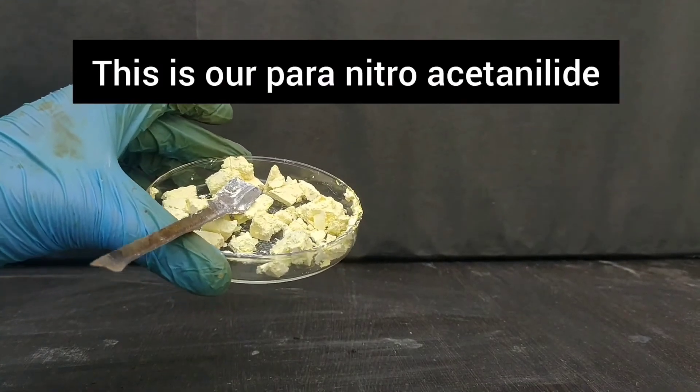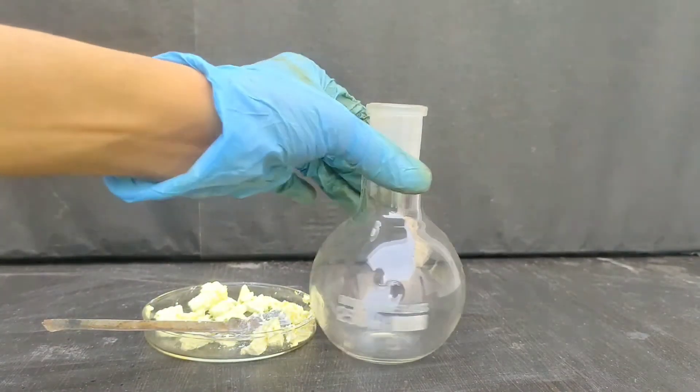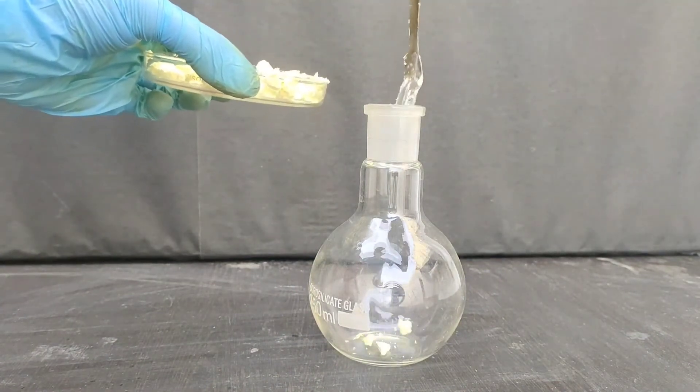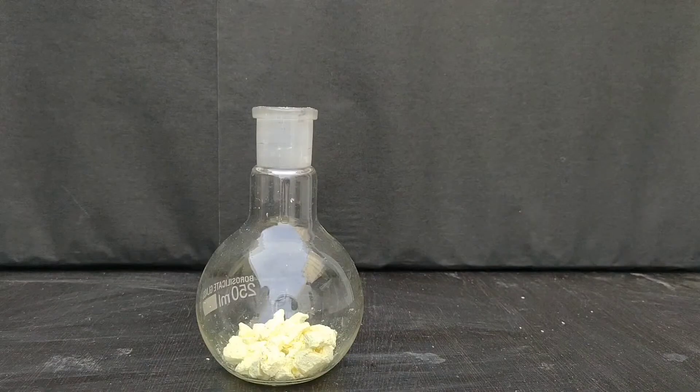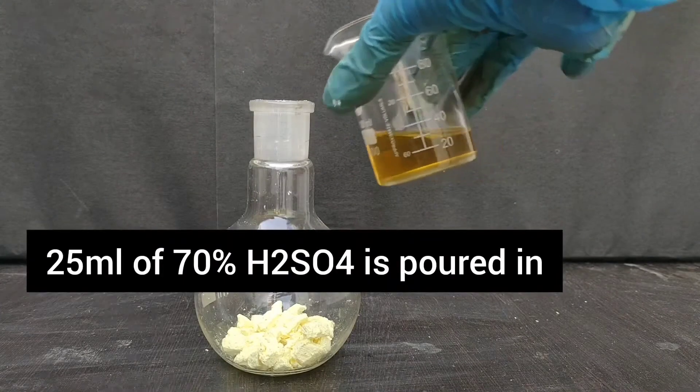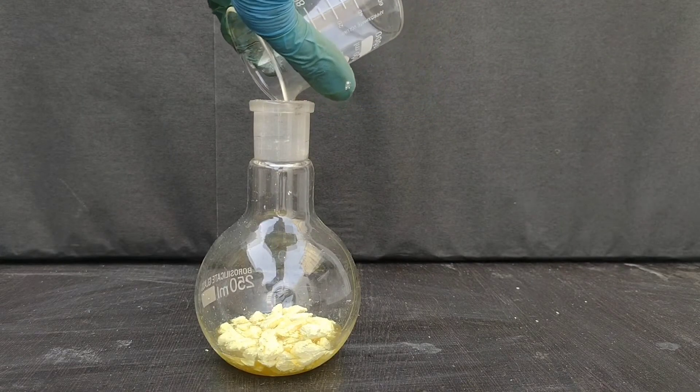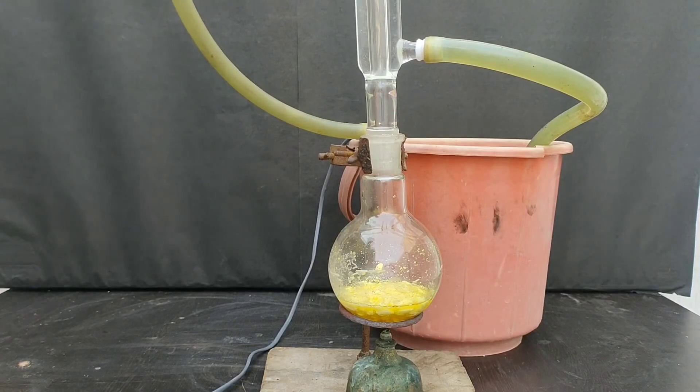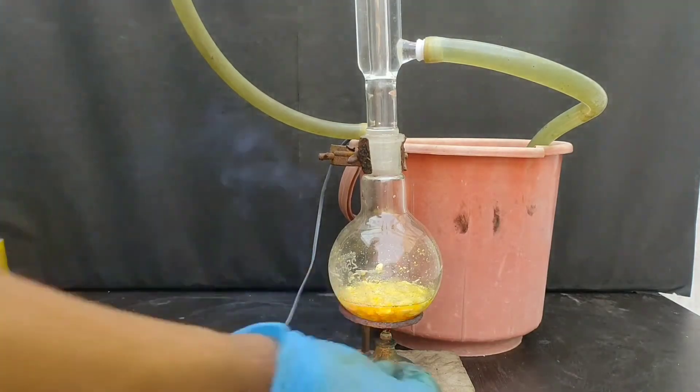The product is para-nitro acetanilide. Now, I will take this in a flat bottom flask. All the para-nitro acetanilide is transferred into the flat bottom flask. To this, we will add 70% concentrated sulfuric acid solution that we have prepared. The flask was set with a reflux condenser on the top, and the contents were gently heated with a spirit lamp for half an hour.